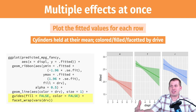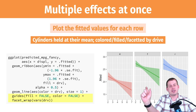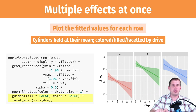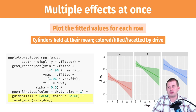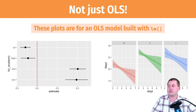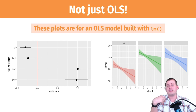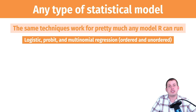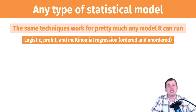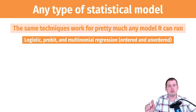Once you get into that habit and figure out the process, it's really easy to do for pretty much any model you make. And this is not just for ordinary least squares regression — these coefficient plots and fitted marginal plots work for pretty much any model R can do. If you're doing logistic regression, probit, ordered logit, multinomial regression, or any other fancy regression model, they all have coefficients so you can make a coefficient plot. They all create predictions, so you can make marginal effects plots.